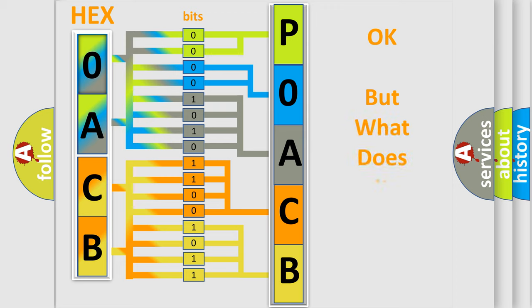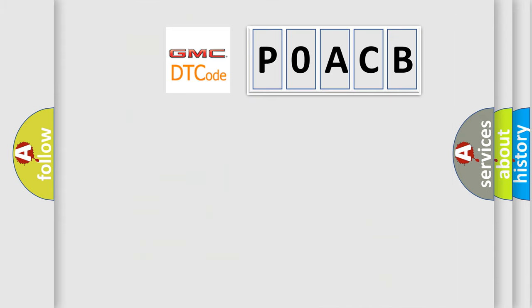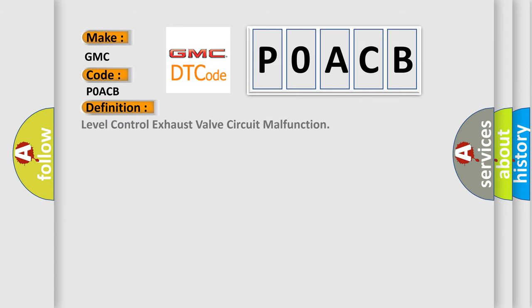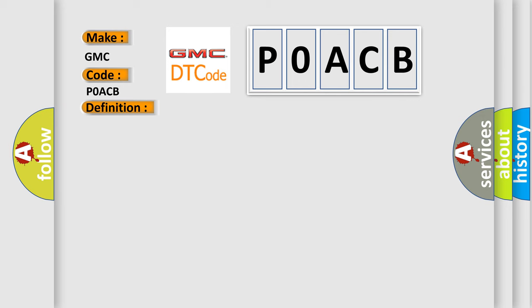We now know in what way the diagnostic tool translates the received information into a more comprehensible format. The number itself does not make sense to us if we cannot assign information about what it actually expresses. So, what does the diagnostic trouble code POACB interpret specifically for GMC car manufacturers? The basic definition is: Level Control Exhaust Valve Circuit Malfunction.